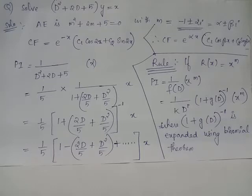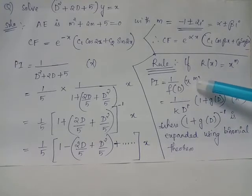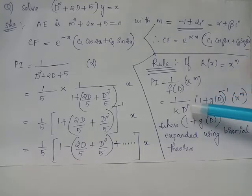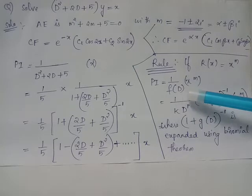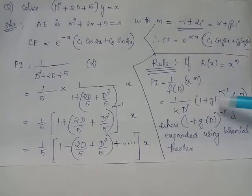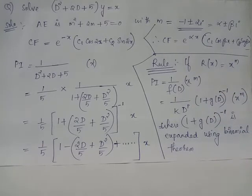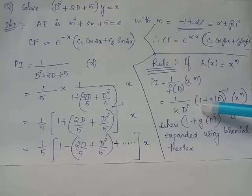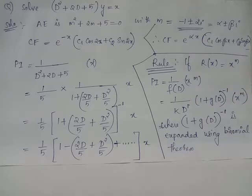In order to find the particular integral, since the RHS is of the format x raised to m, we have the rule: 1 by f of D acting on x raised to m has to be evaluated such that f of D should be transformed as k times D raised to p plus 1 plus g of D, the whole inverse acting on x raised to m. This term, 1 plus g of D the whole raised to minus 1, has to be expanded using the binomial theorem.